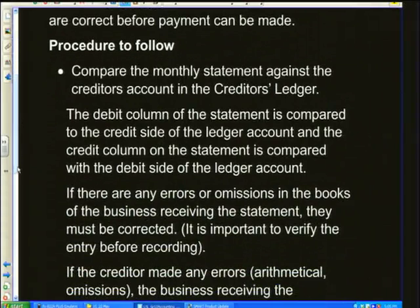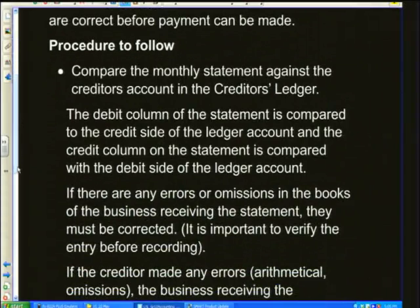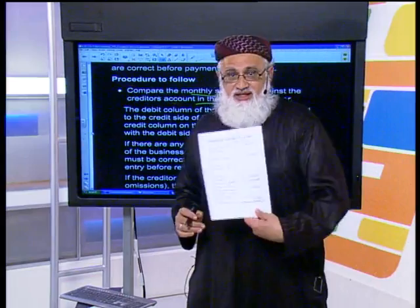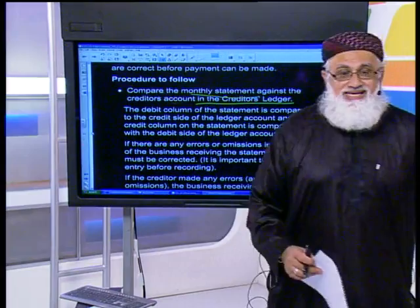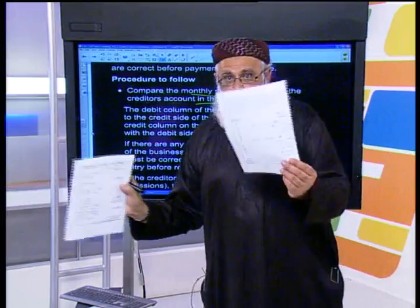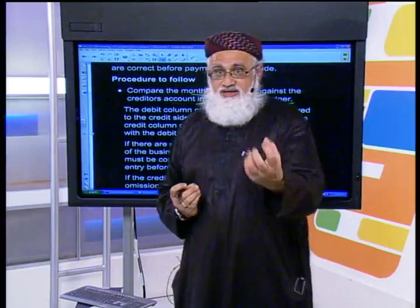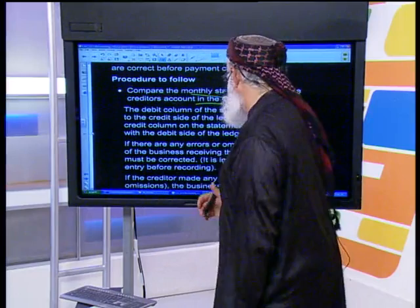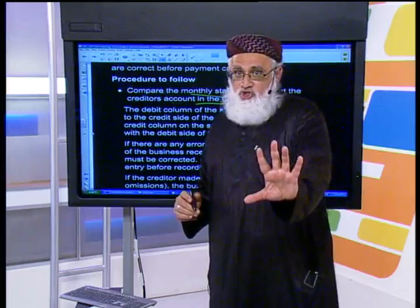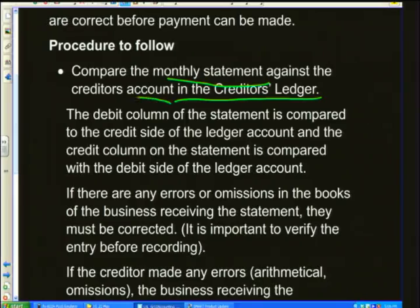What's the procedure we're going to follow? Number one: compare the monthly statement against the creditors' ledger. You're comparing the creditors' statement you've received with your balance as it appears in my ledger — two things being compared: the statement with the ledger. The statement from the creditor and the creditor's account as it appears in my creditor's ledger. The debit column of the statement is compared with the credit side of the ledger account.